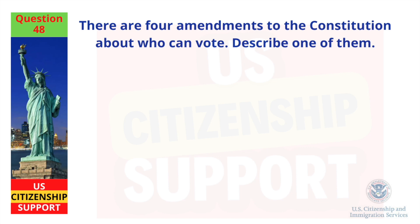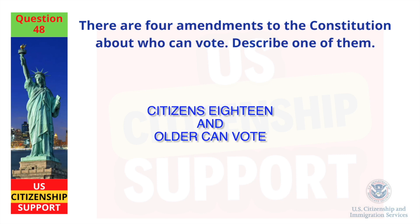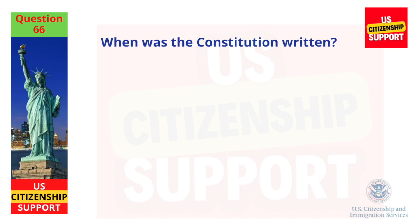There are four amendments to the Constitution about who can vote. Describe one of them. Citizens 18 and older can vote. When was the Constitution written? 1787.